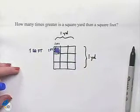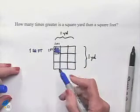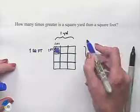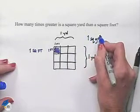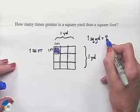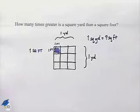many square feet do we see there? We see one, two, three, four, five, six, seven, eight, nine. So we know that one square yard is going to equal nine square feet, and therefore a square yard is nine times larger.